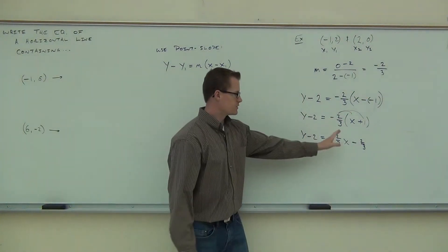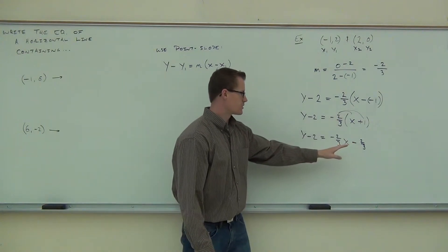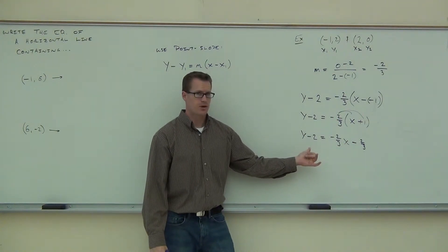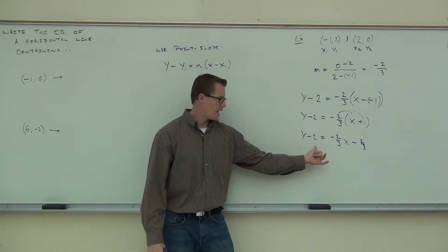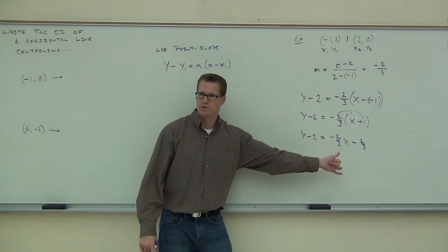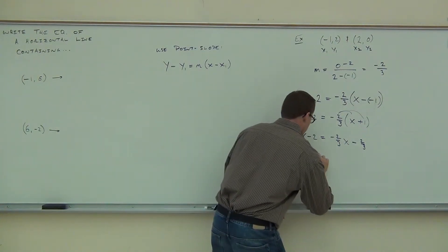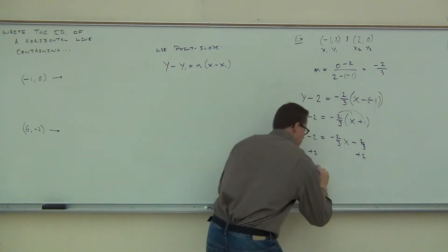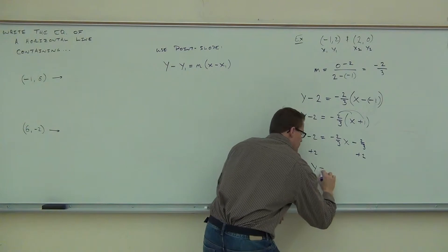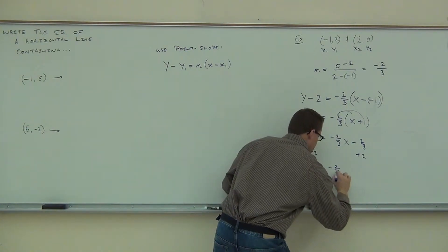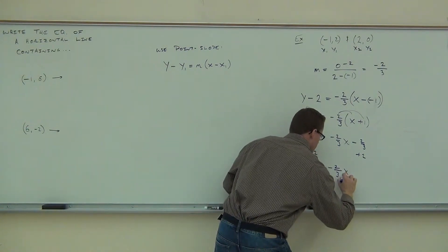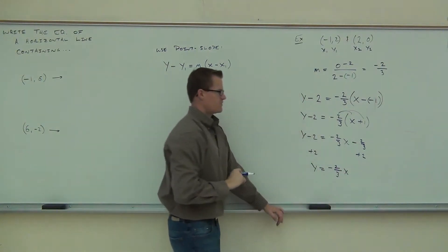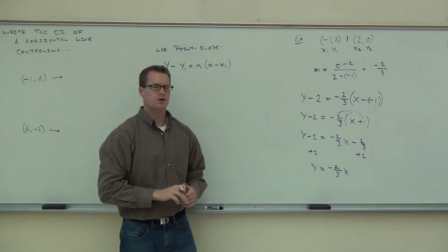When we distribute, we get negative 2 thirds x minus 2 thirds. Lastly, you have to get y by itself, which means you're going to add 2 to both sides. So y equals negative 2 thirds x, and then we have negative 2 thirds plus 2.